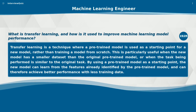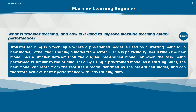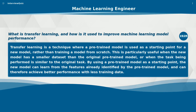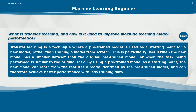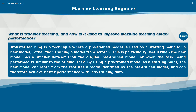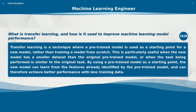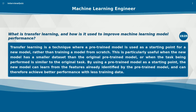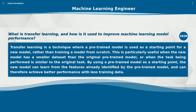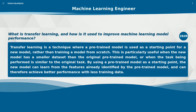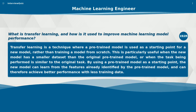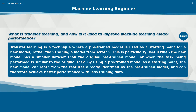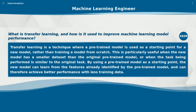What is transfer learning, and how is it used to improve machine learning model performance? Transfer learning is a technique where a pre-trained model is used as a starting point for a new model, rather than training a model from scratch. This is particularly useful when the new model has a smaller dataset than the original pre-trained model, or when the task being performed is similar to the original task. By using a pre-trained model as a starting point, the new model can learn from the features already identified by the pre-trained model, and can therefore achieve better performance with less training data.